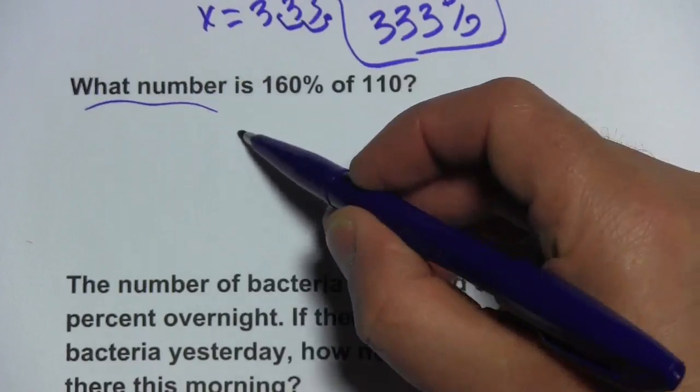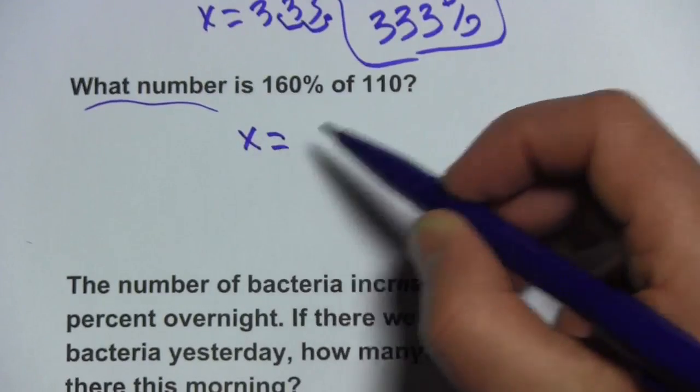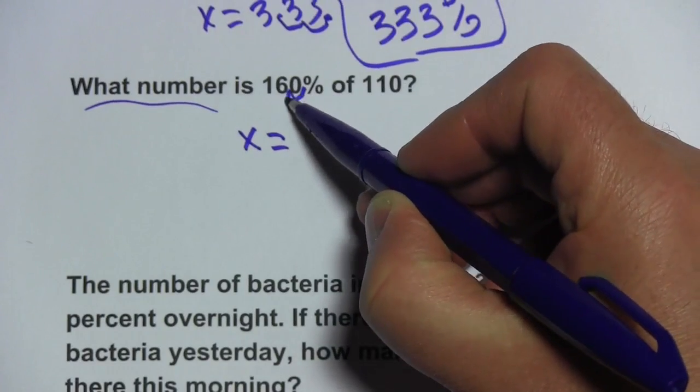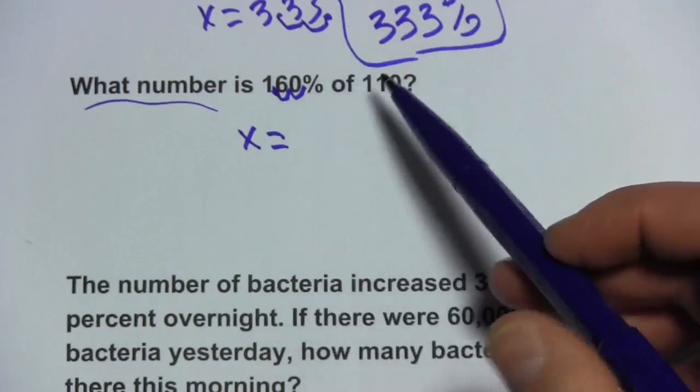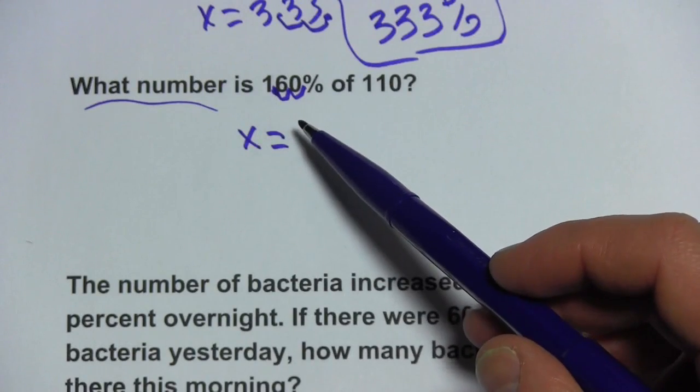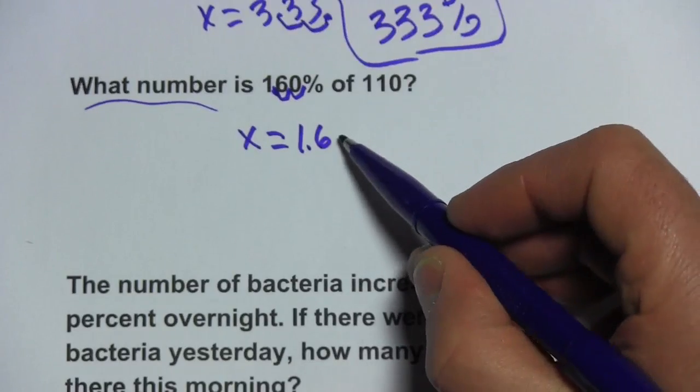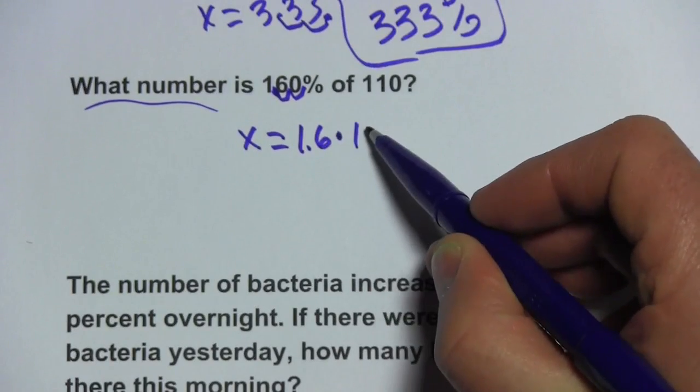It starts with what number, that's going to be our x, is is the equal sign. 160%, let's go ahead and convert that to a decimal. So moving the decimal point two places to the left, we get 1.6, of is multiply and 110.